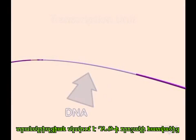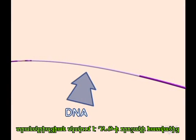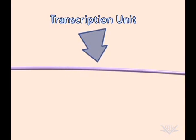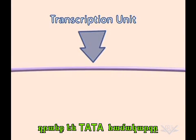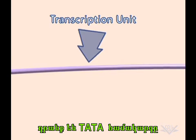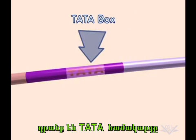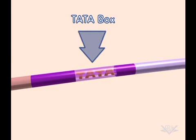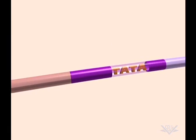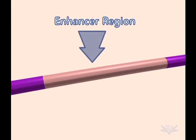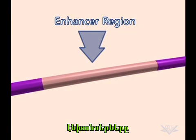Transcription begins with a strand of DNA, which is divided into several important regions. The largest of these is the transcription unit — the portion of the DNA that will be used to produce RNA. Upstream of the transcription unit is the TATA box. An enhancer region may also be involved.